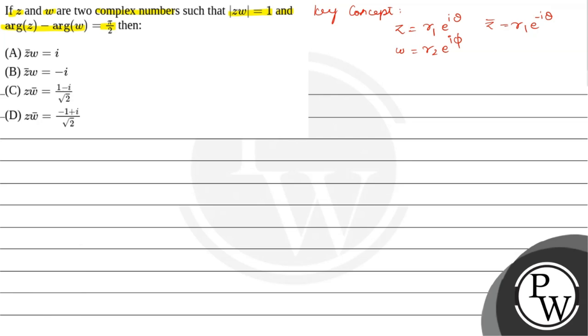Here it is given that modulus of ZW is equals to 1. So this means modulus of Z into modulus of W is equals to 1.